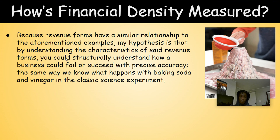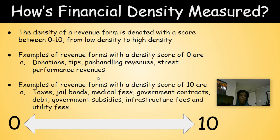When I say 'could fail or succeed,' that can mean either an internal analysis or comparing a business to a competitor. This presentation is going to be comparing a business with competitors, but be aware it could also be a singular internal analysis. The density of a revenue form is denoted with a score between zero and ten, from low density to high density. Examples of revenue forms with a density score of zero are donations, tips, panhandling revenue, and street performance revenues.